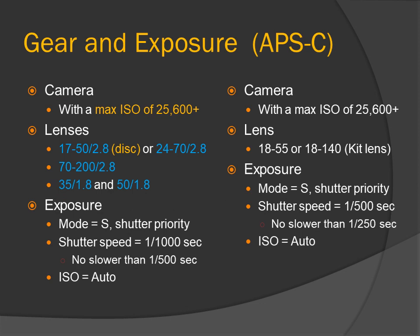Gear and exposure — APS-C, on the left, using fast lenses. Camera with a max ISO of 25600 or more. Lenses: 17-50mm f/2.8 (recently discontinued), or 24-70mm f/2.8 and 70-200mm f/2.8 for the longer shots. And for dim alleys: 35mm f/1.8 and 50mm f/1.8. Exposure: shutter priority. Shutter speed 1/1000th of a second, no slower than 1/500th of a second. ISO: auto.